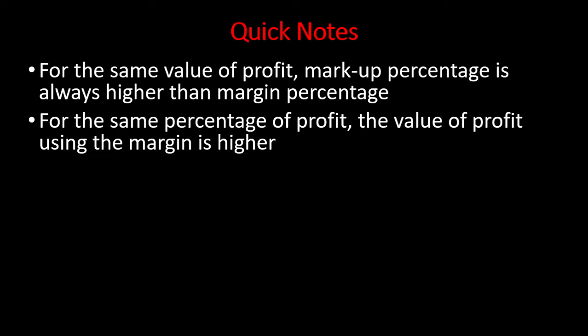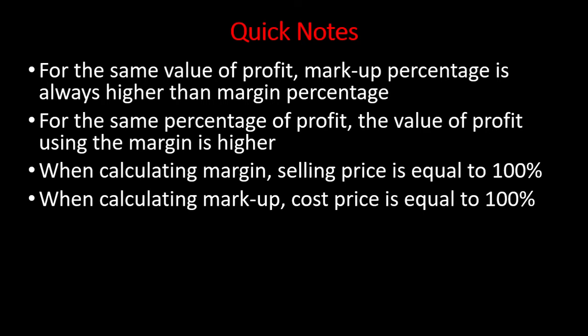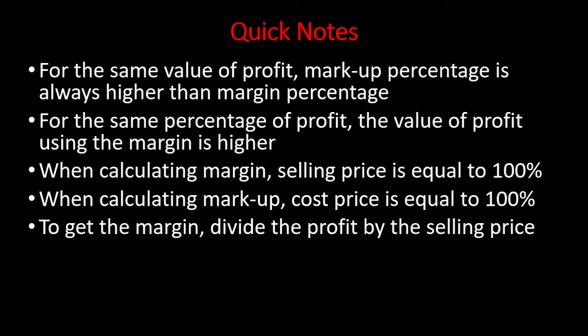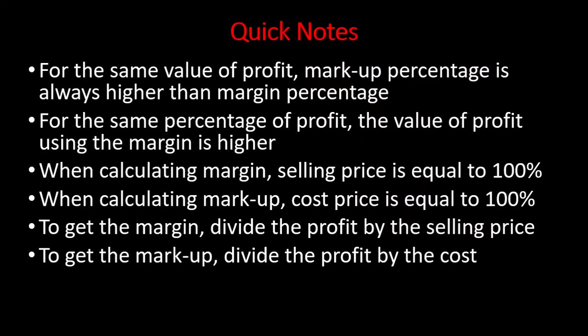We shall see how it plays out by looking at an example. When calculating the margin, selling price is equal to 100%. When calculating markup, cost price is equal to 100%. So to get the margin, we divide the profit by the selling price, and to get the markup, we divide the profit by the cost price. That is the main difference between the two — the denominator.